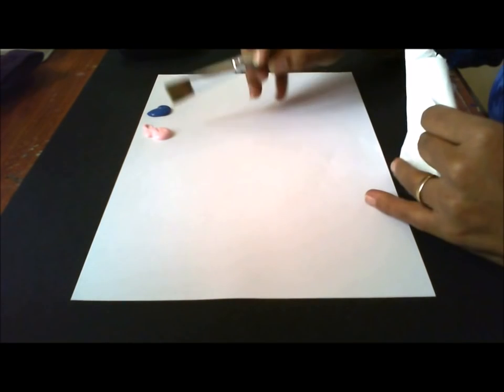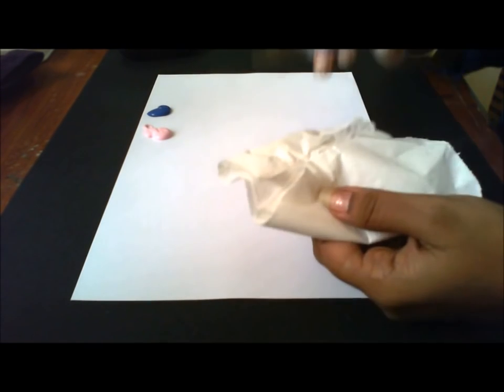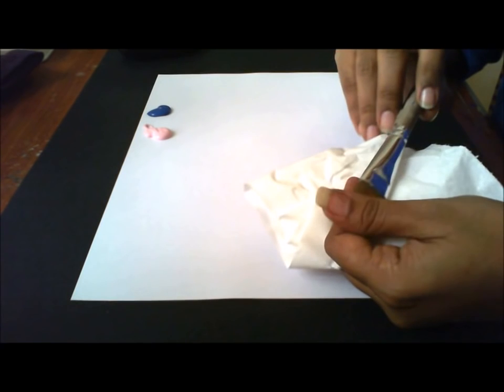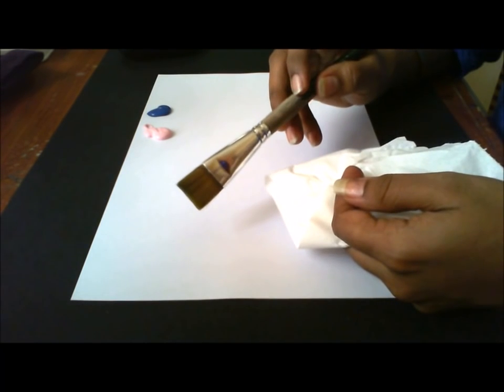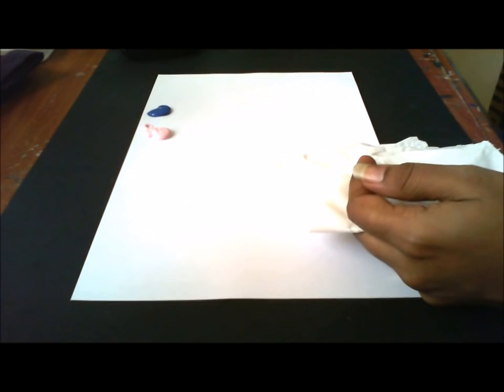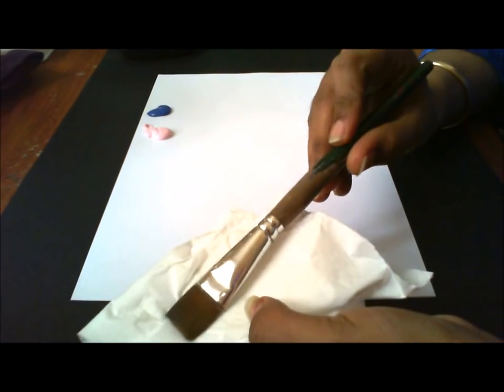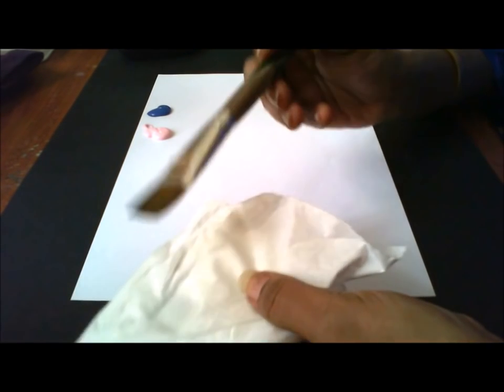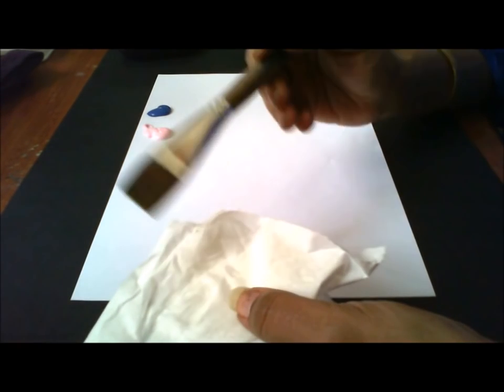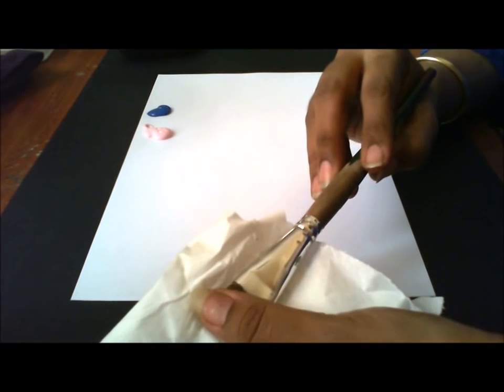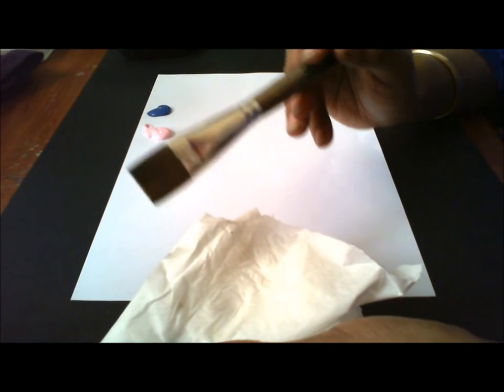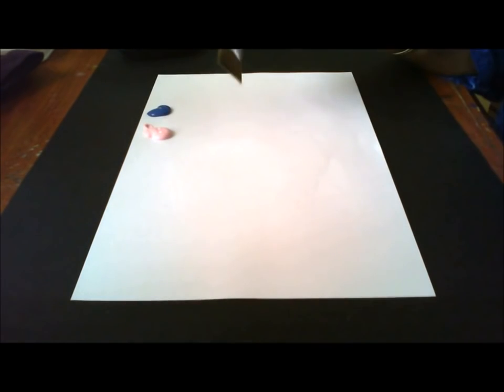Once you take your colors, how will you start loading your brush? This is your brush. I am just dipping my brush in water and I will press it gently on my tissue so that I just get rid of the excess water. The water should not be dripping from your brush.